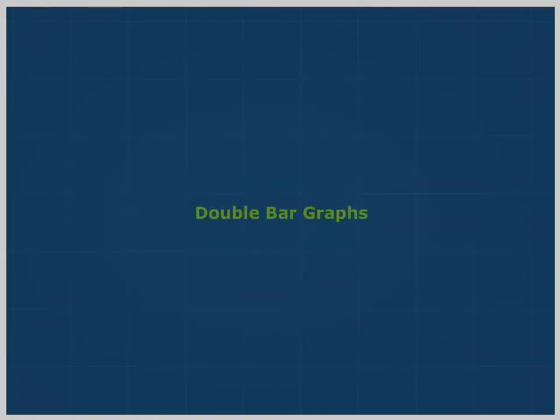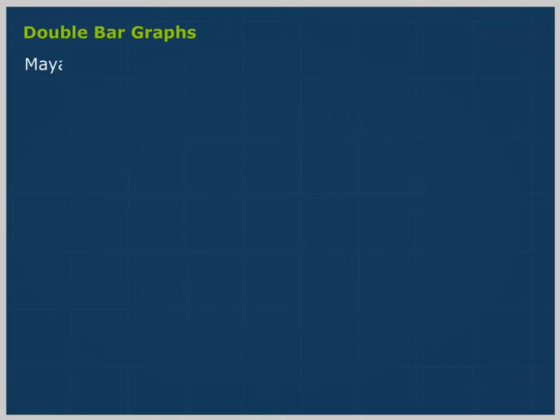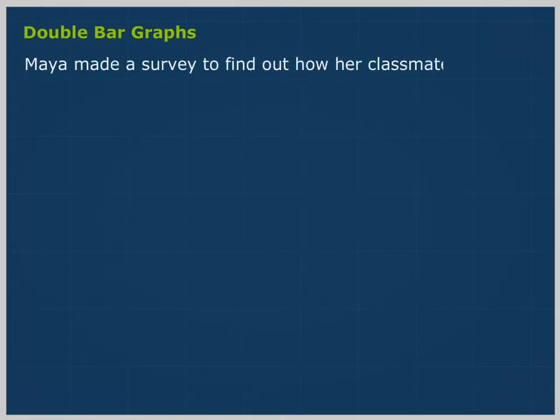Data handling. Double bar graphs. Maya made a survey to find out how her classmates used their home computers. She recorded the girls' and boys' responses separately. She later made a double bar graph to compare the two sets of data using the following steps.